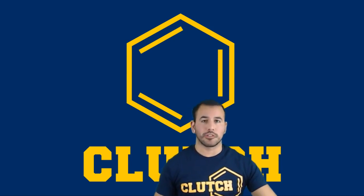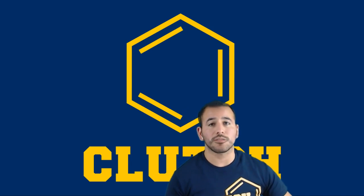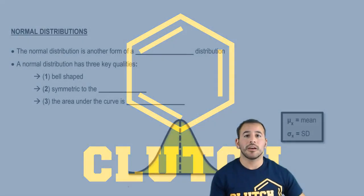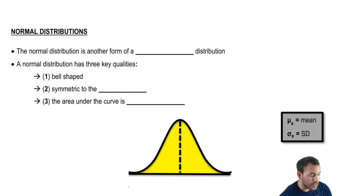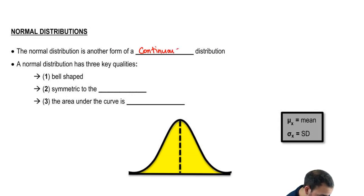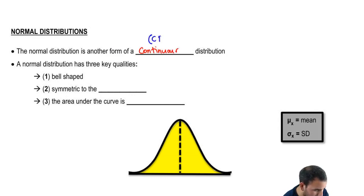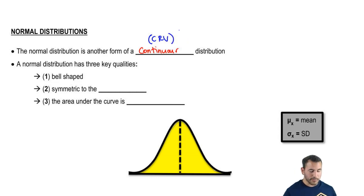But now we're going to move on to the normal distribution. This is one particular type, and we're going to be focusing on this distribution for pretty much the rest of the class. The normal distribution is another form of a continuous distribution — specifically a continuous random variable, or CRV.